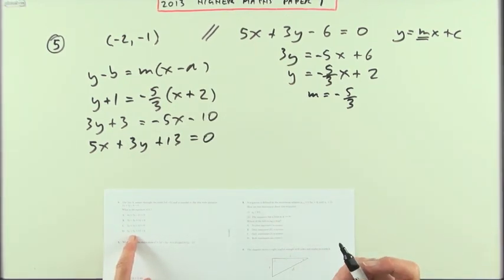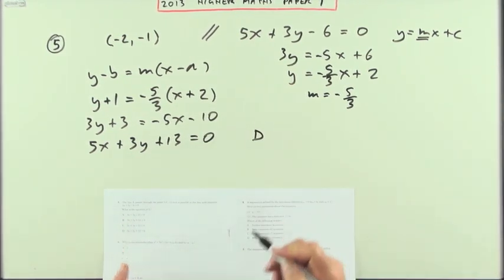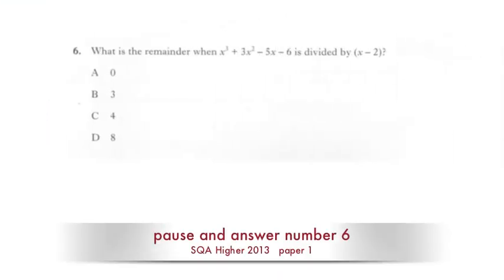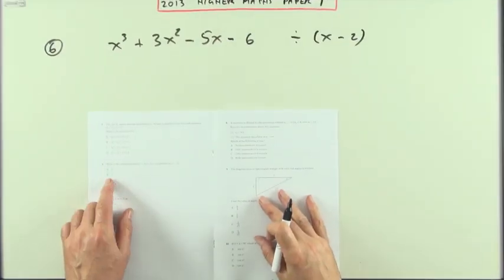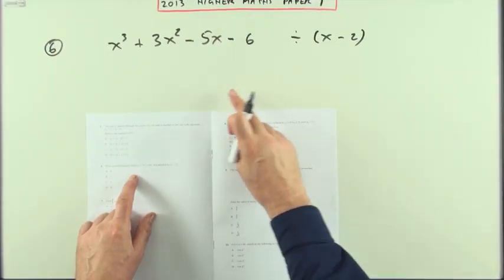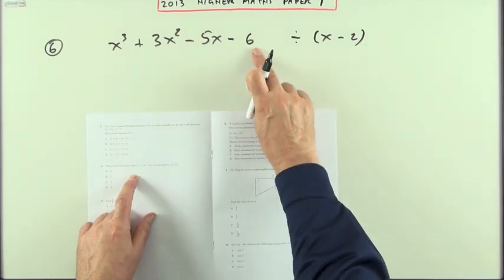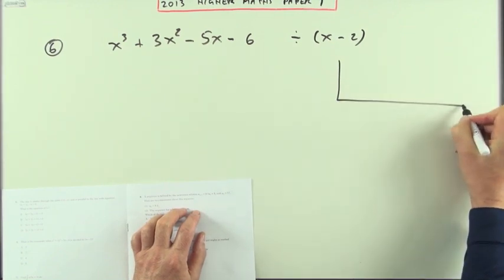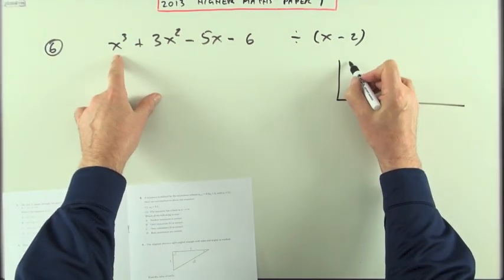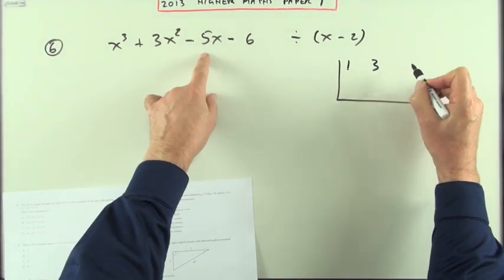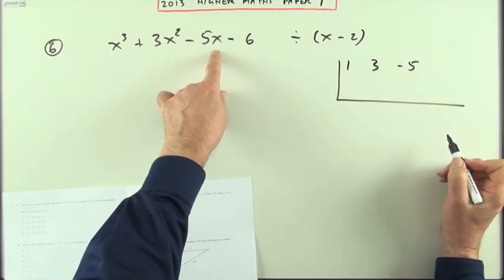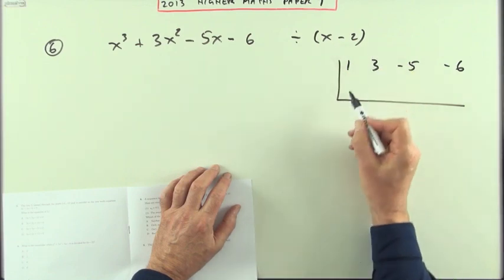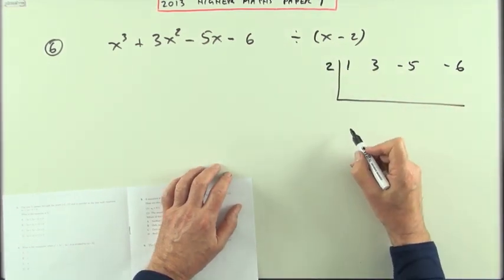That would be the answer: 5x plus 3y plus 13 equals 0. Number six — what's the remainder when you divide this cubic expression by this linear term? Synthetic division. Pop down the coefficients: 1 for x cubed, 3 for x squared, negative 5 for x, and negative 6 for the constant. If I'm dividing by x minus 2, it's the 2 — the root — I'll put through.